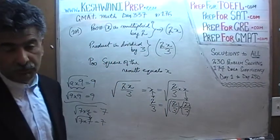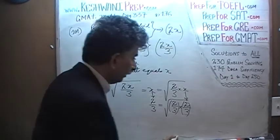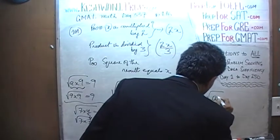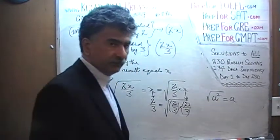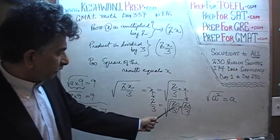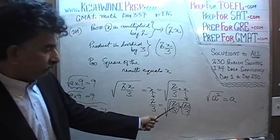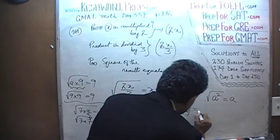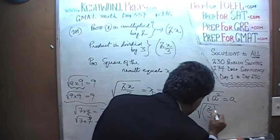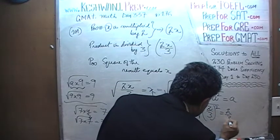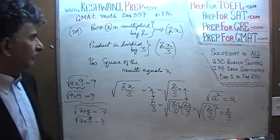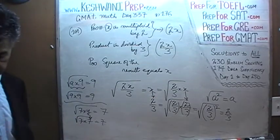Now it's very obvious, because the square root of a squared is a, obviously. So two-thirds times two-thirds — which is the square of two-thirds, which is two-thirds squared — will of course equal two-thirds. That's all it is. The missing x is two-thirds. That's all there was.